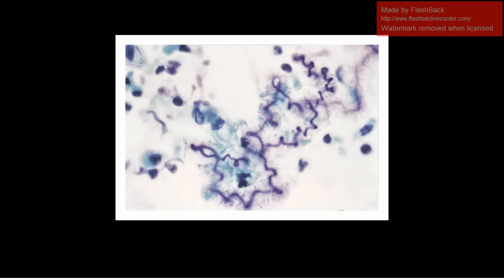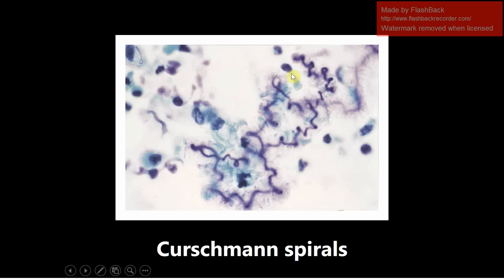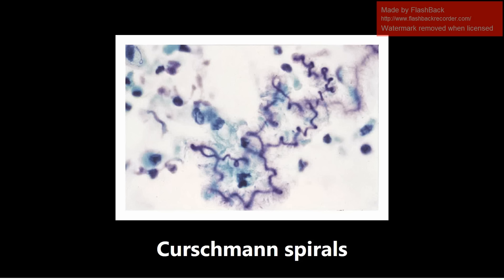This is going to be the last image for this video. These are Curschmann spirals, which represent spiral-shaped mucus plugs seen from a variety of lung diseases. One common one is asthma. If you ever see this type of spirally appearance, don't be fooled — it's not a spirochete. You want to be thinking Curschmann spirals and some type of lung pathology, primarily asthma. So this was the first video. I hope it was helpful and I will be making the next few videos soon.